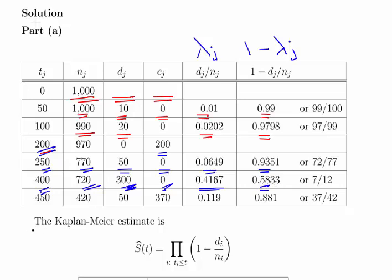The last period is 450 hours onwards. We start with 420 bulbs. 50 break down around the 450th hour, leaving 370 that survive on. Those 370 are counted as censored — we don't know when they would break down. The event probability is 50 divided by 420, which gives 0.119. So the survival probability in this period is 0.881.